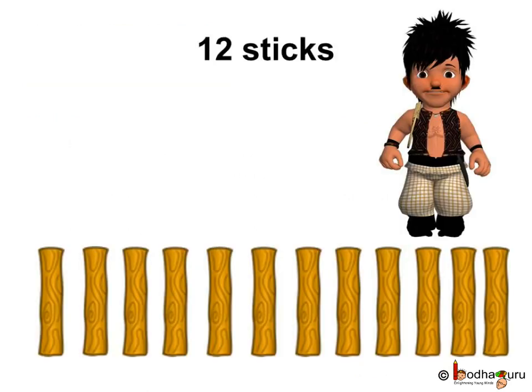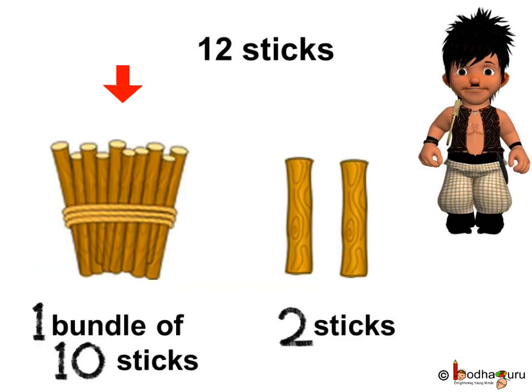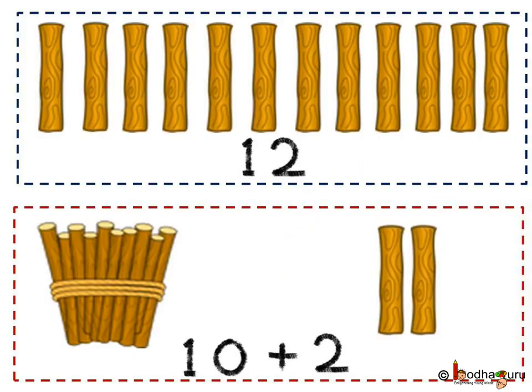Look, Bola has 12 sticks. He tied them in a bundle of 10, and 2 sticks remain loose. So, we can either say 12 sticks or we can also write it as 10 plus 2.